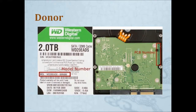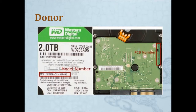Now let's talk about how to find a donor drive for a WD drive. First, you need to find a drive with the same model and the same PCB — this is very basic, whether you're looking for a donor PCB or donor firmware. You also need to match the country code and the manufacturing date. The date and country code need to be close or identical.